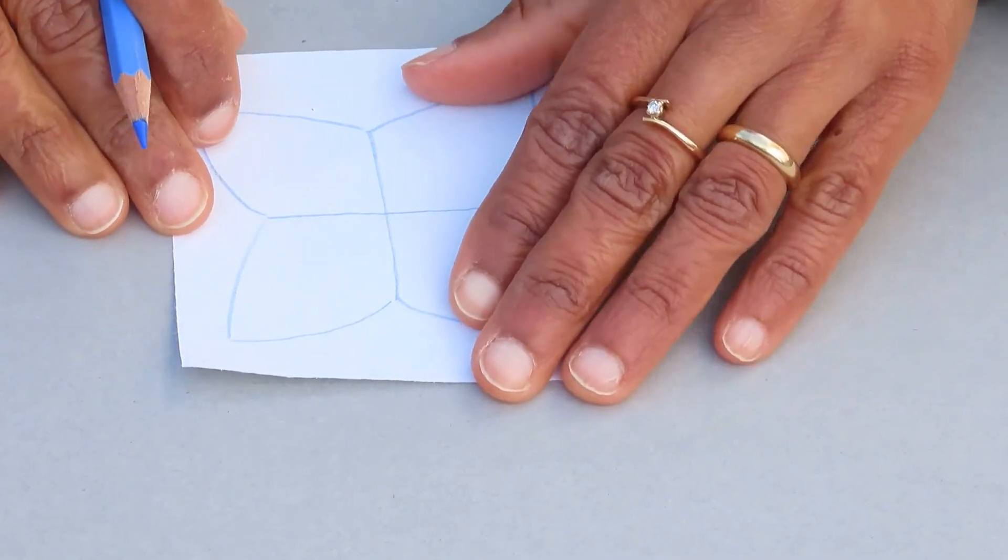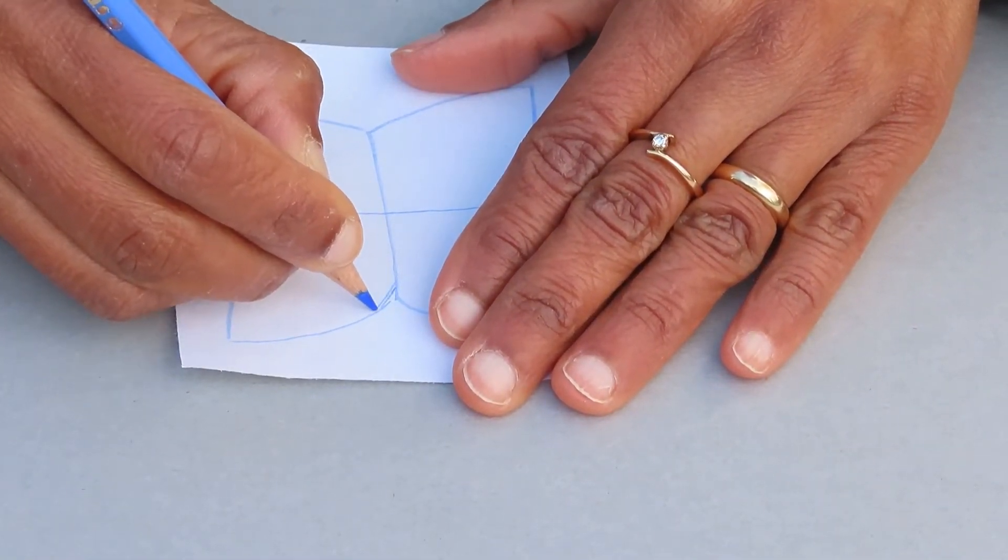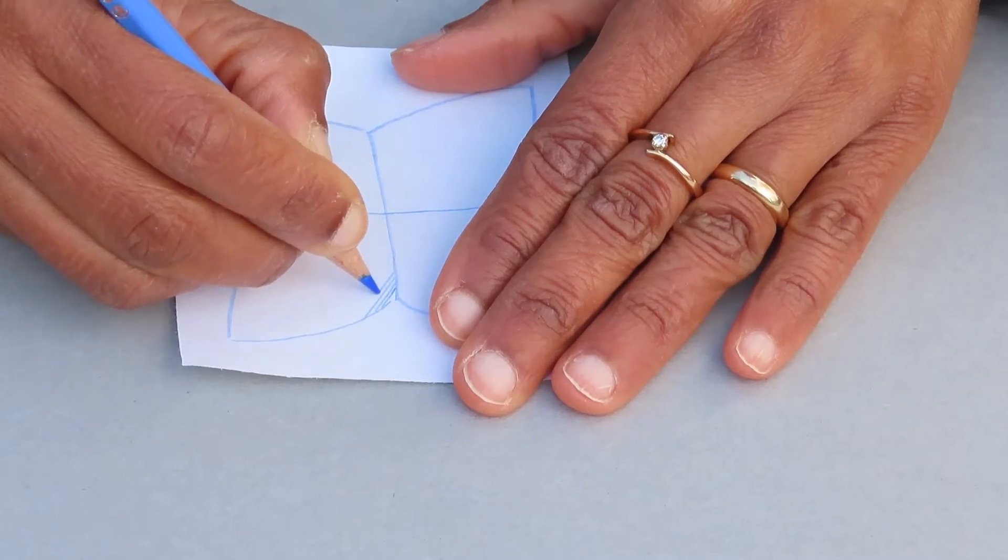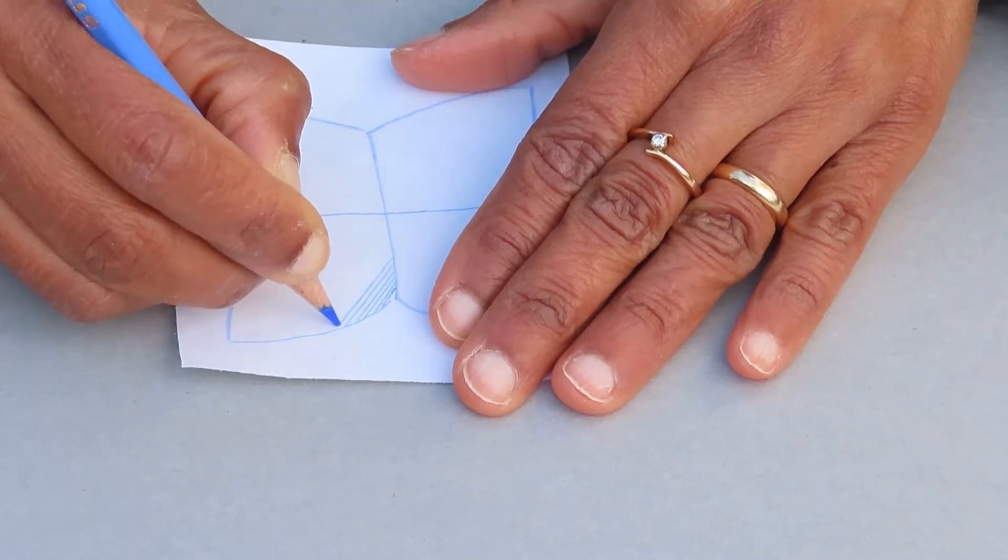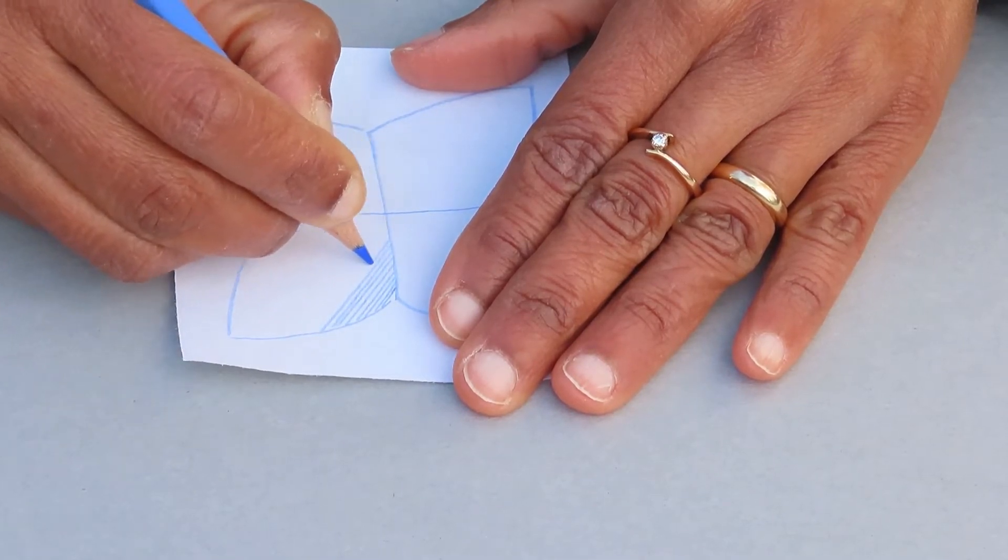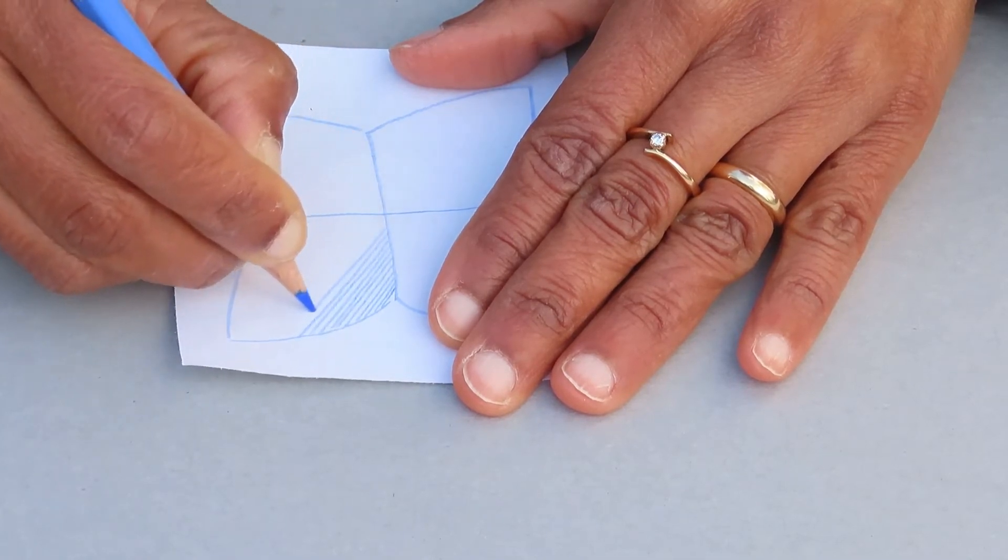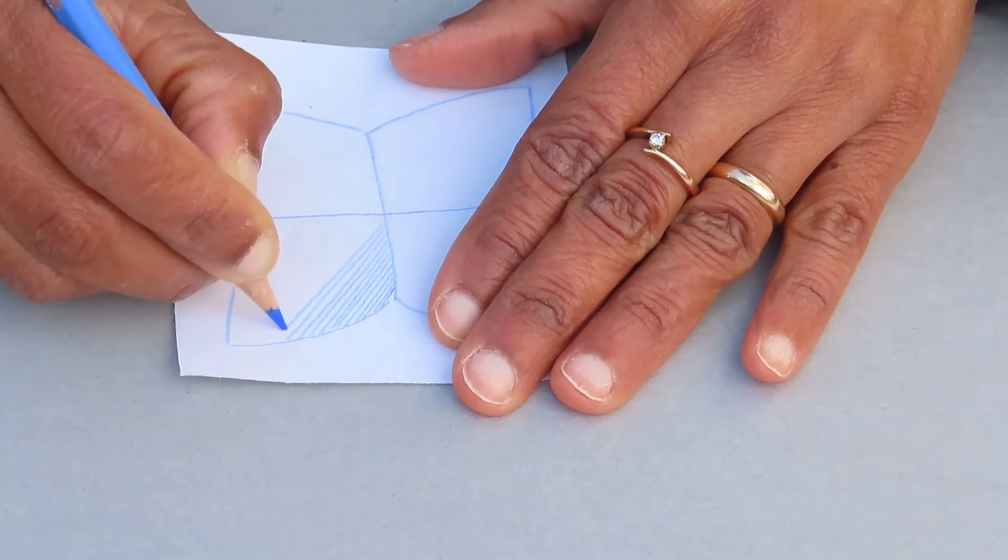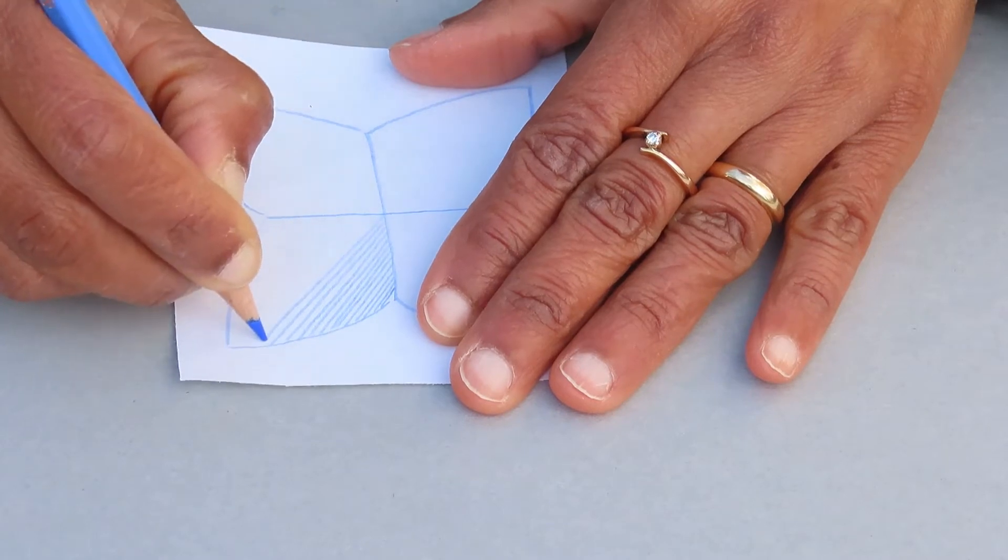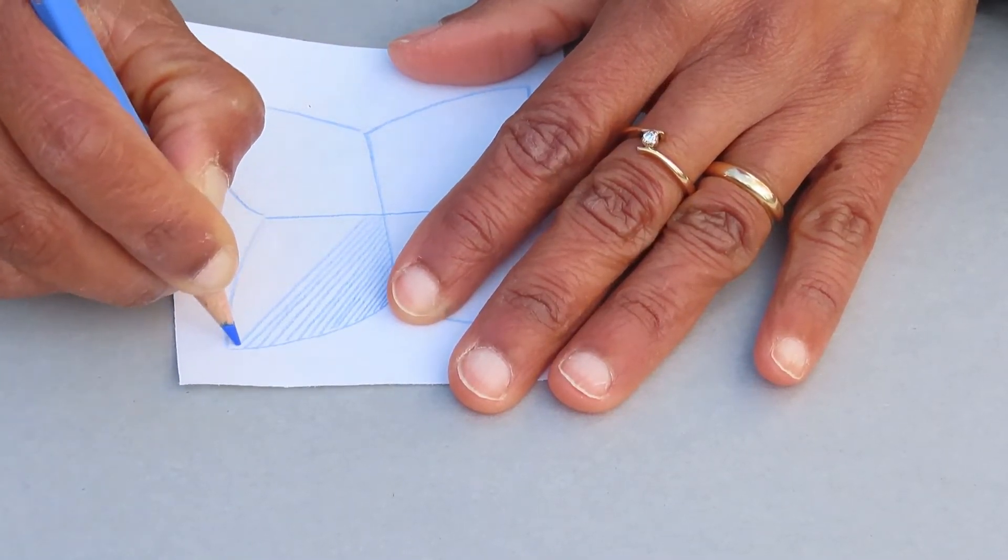And now we'll fill in the petals with straight lines. Line by line, we change the color of the paper. The white paper becomes blue. The white petal becomes a blue petal.